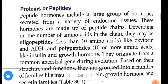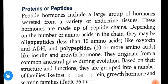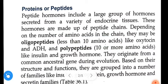What are oligopeptides? Peptide hormones that contain less than 10 amino acids are called oligopeptides. Examples of oligopeptides are oxytocin and antidiuretic hormone.